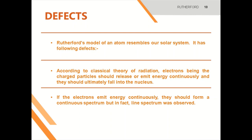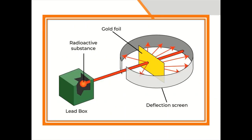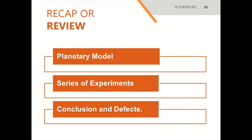Defects: Rutherford's model of an atom resembles our solar system, but it has the following defects. According to the classical theory of radiation, electrons being charged particles should release or emit energy continuously, and they should ultimately fall into the nucleus. If the electrons emit energy continuously, they should form a continuous spectrum, but in fact, a line spectrum was observed.